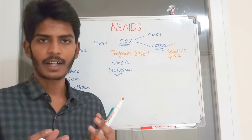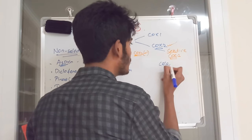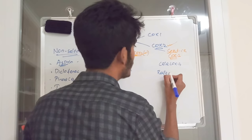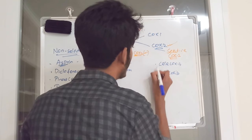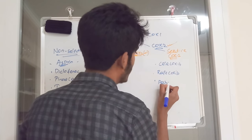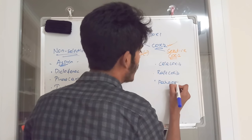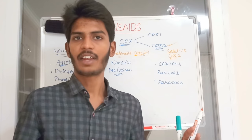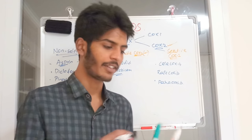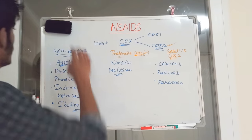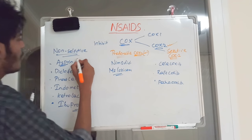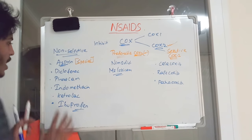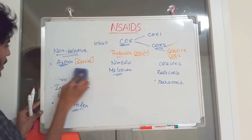Aspirin is a very special drug among NSAIDs. While other NSAIDs are reversible inhibitors, aspirin's mechanism is fundamentally different. It inhibits COX through an irreversible mechanism.